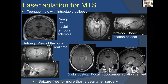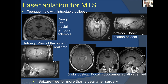A case example: a teenage male with intractable epilepsy whose MRI showed a smaller left hippocampus with more surrounding ventricle — consistent with left mesial temporal sclerosis — underwent laser ablation. The catheter was placed and position verified within the hippocampus before burning. Because the hippocampus is long and thin, ablation is done in stages — burn a small amount, pull the catheter back, burn again, repeating until adequate coverage is achieved. Intraoperatively, temperature mapping of the brainstem and cerebellum confirmed no unintended heating. At six-week post-op imaging, ablation was confirmed exactly as intended, and this patient was seizure-free for more than a year after surgery — for the first time in his life.